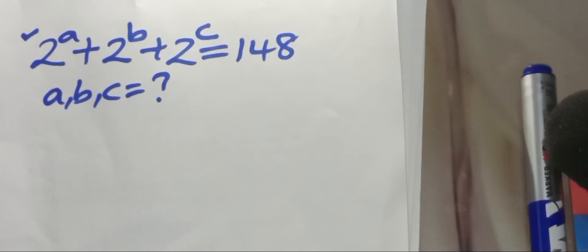Hello YouTube family! Let's provide a solution given this nice exponential equation: 2 to the power A plus 2 to the power B plus 2 to the power C is equal to 148. So what is the value of A, B, and C?